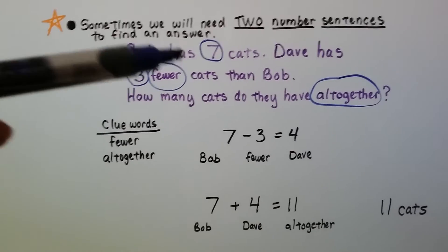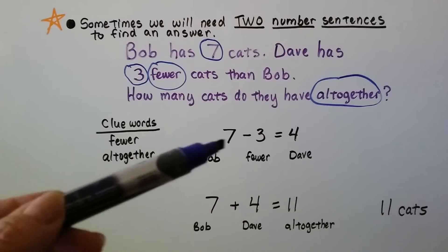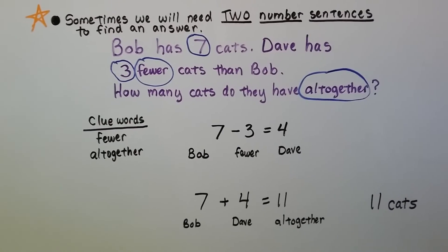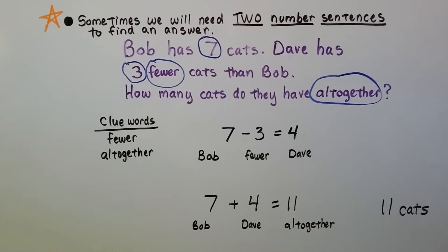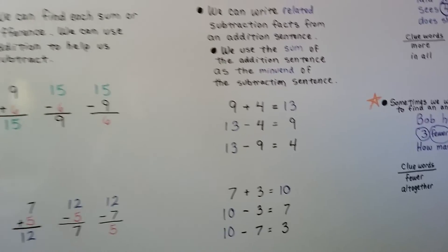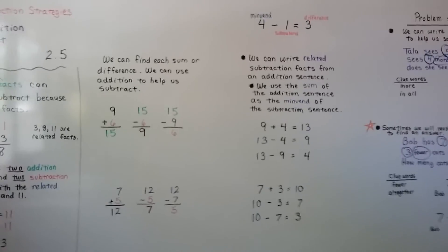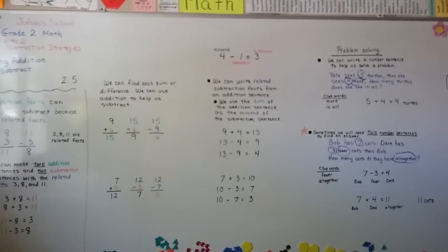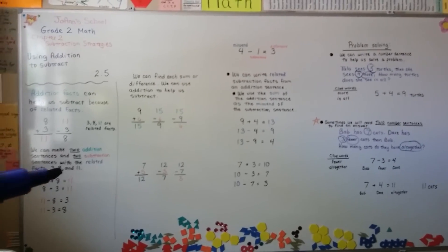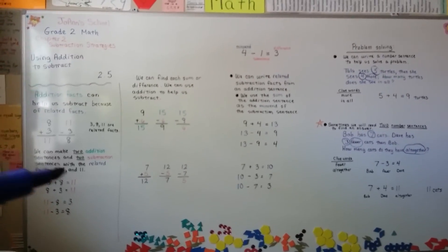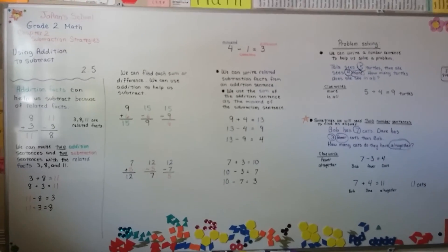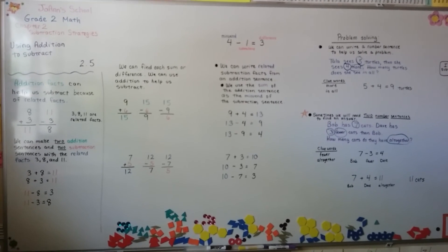You might have been able to do it in your head, but it's actually two sentences — a subtraction, then an addition. So that's how we can use addition to subtract. If we know our addition facts, it'll help us do subtraction because of the related facts. We know that three numbers make related facts, and we can make four equations: two addition and two subtraction. See you next video!